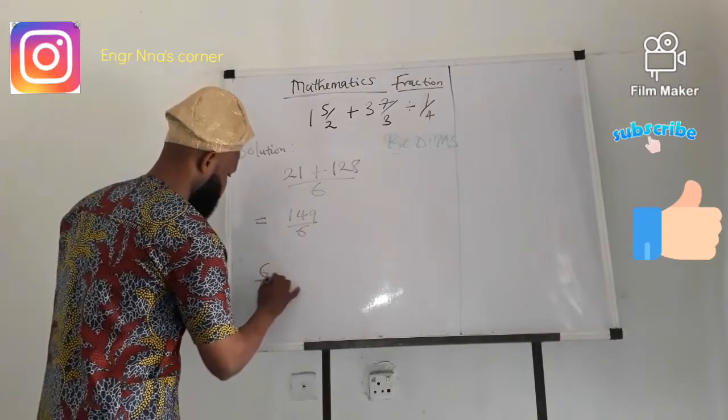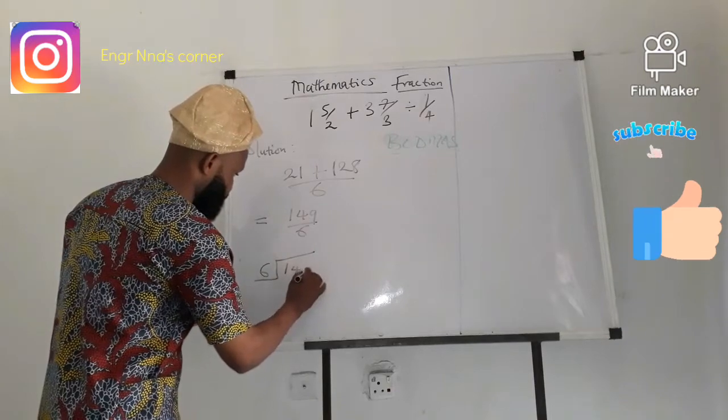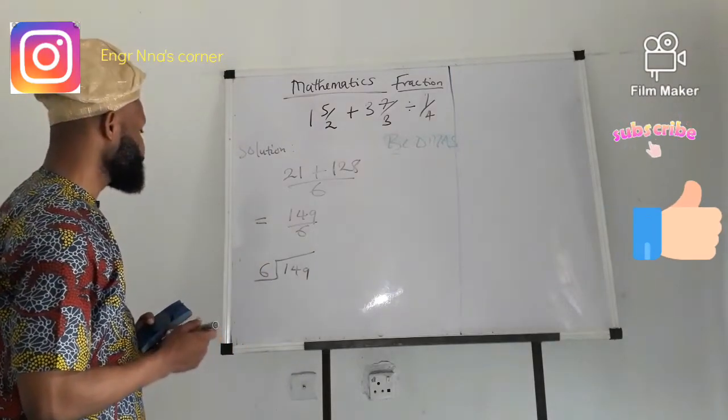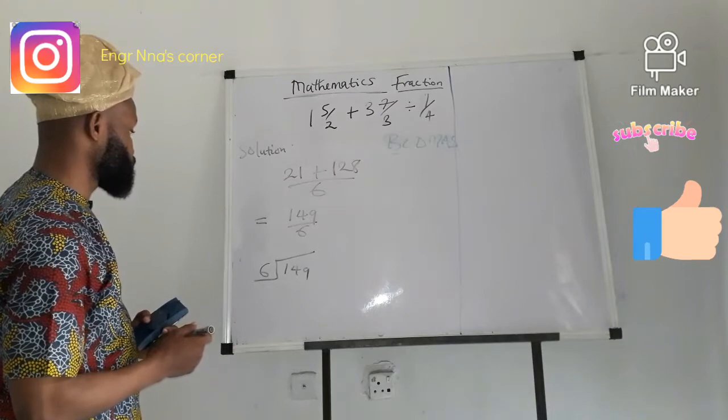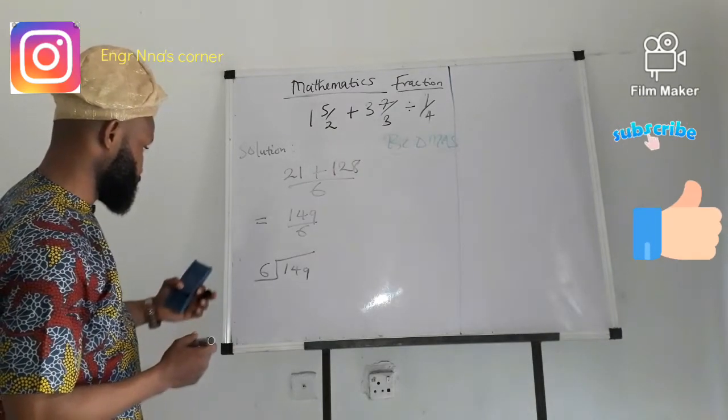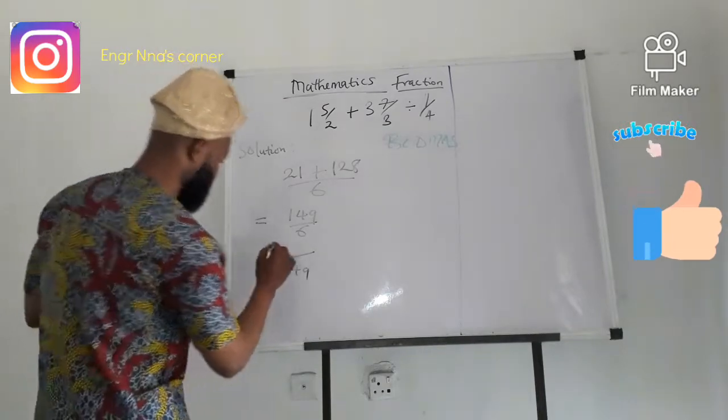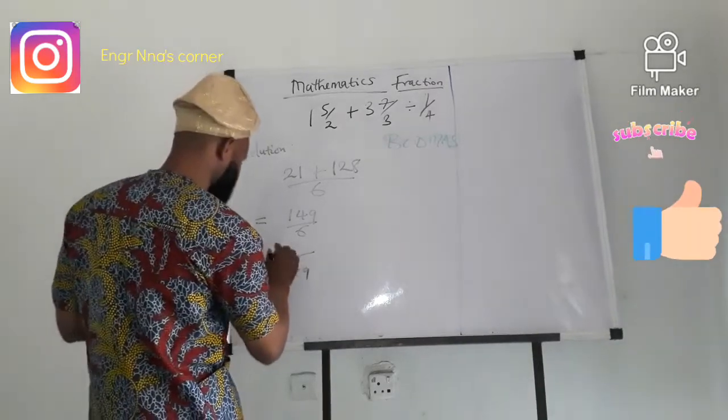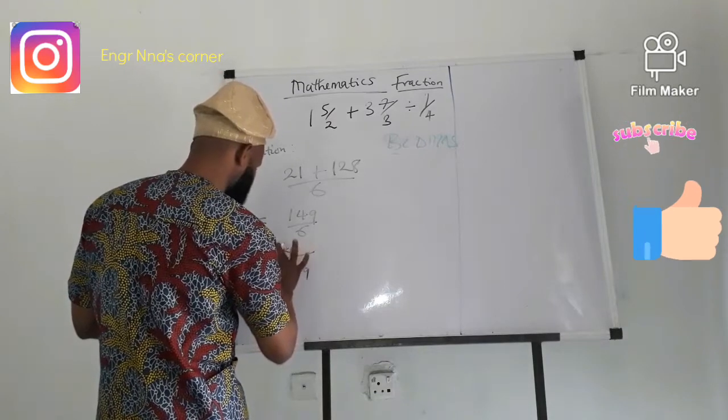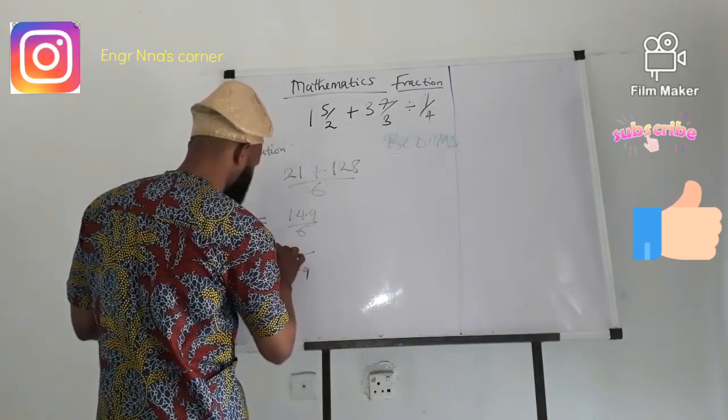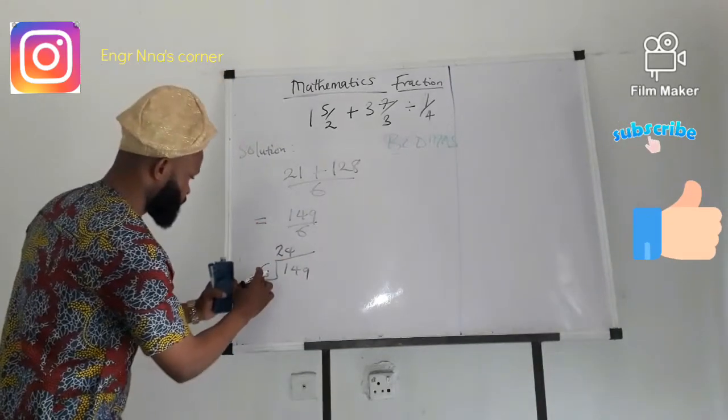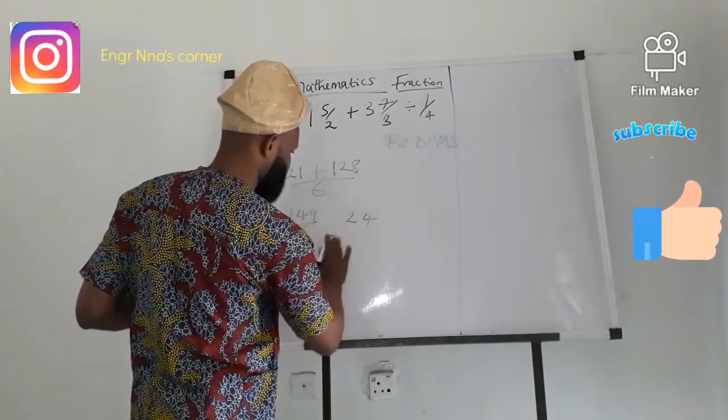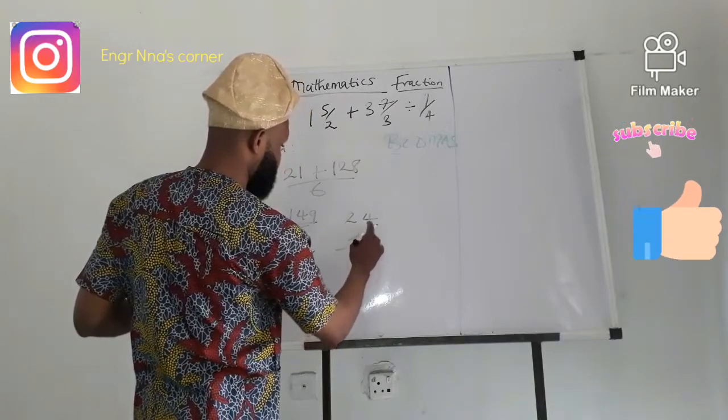So we go ahead by using long division, 149. So if 6 persons divide 149, each person is going to have 24. So 24 multiplied by 6 would give us 144.